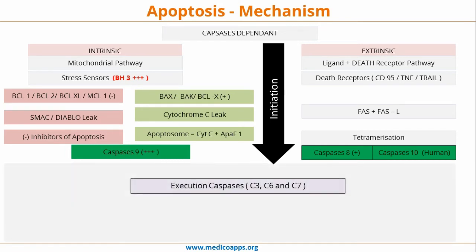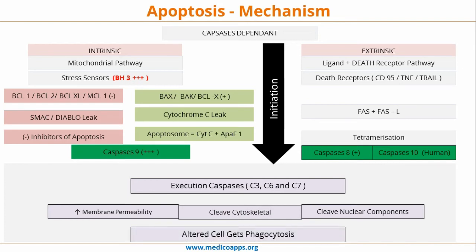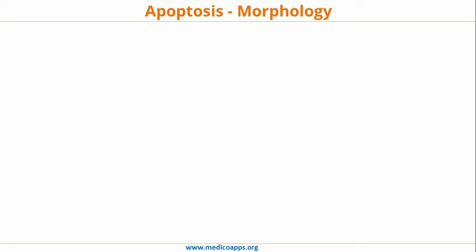This leads to the execution phase. The execution caspases are C3, C6, and C7. Once they are activated, they lead to an increase in cell membrane permeability, cleavage of the cytoskeleton, and cleavage of nuclear components. These three effects ultimately lead to apoptosis of the cell, and the altered cell is phagocytosed.